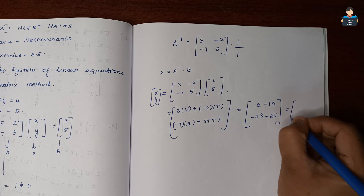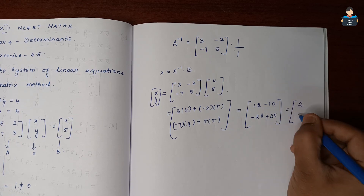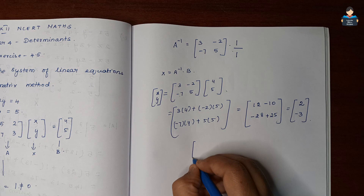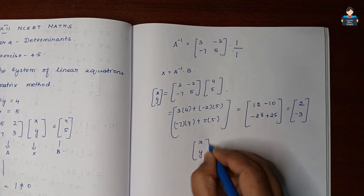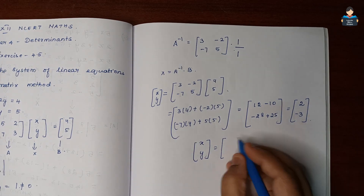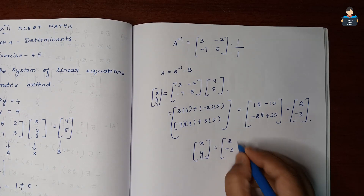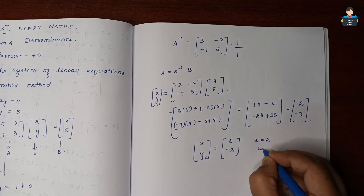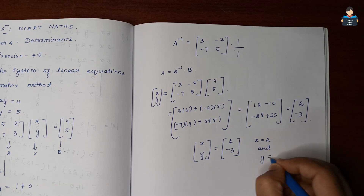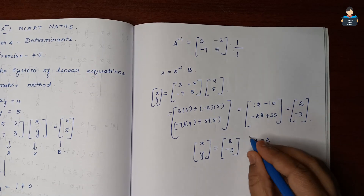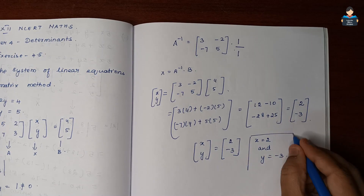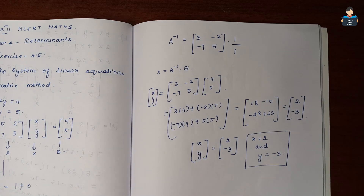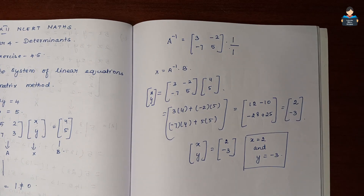So 12 minus 10 equals 2, and minus 28 plus 25 equals minus 3. Therefore x equals 2 and y equals minus 3. This is the final answer for Question 7. Next, Question number 8.